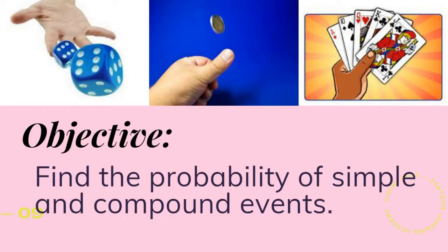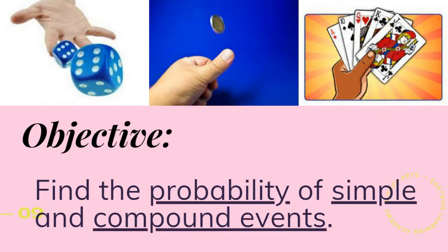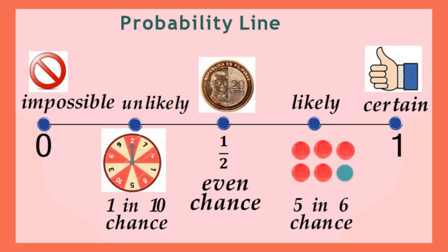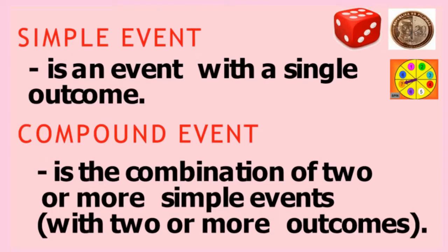Today's objective is to find the probability of simple and compound events. Let's focus on three important terms: probability, simple events, and compound events. Probability means it is the chance that something will happen. An event which is impossible to happen has a probability of zero, and if an event is definitely going to happen, its probability is one. So the probability goes from zero to one only. A simple event is an event with a single outcome, while a compound event is the combination of two or more simple events, or with two or more outcomes.